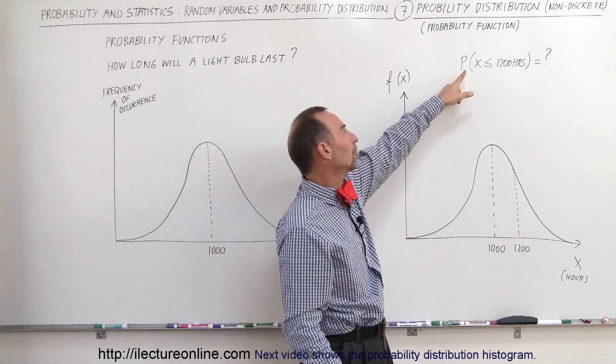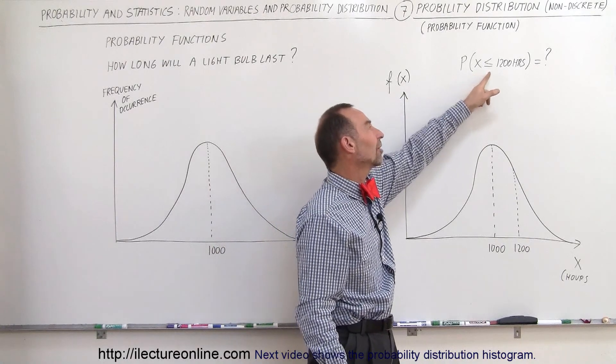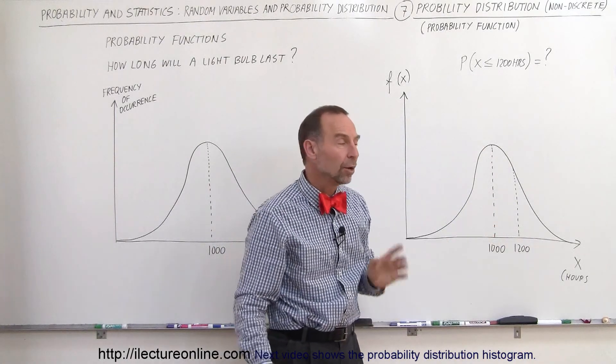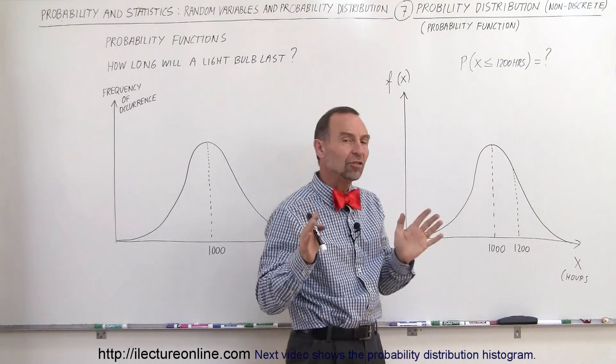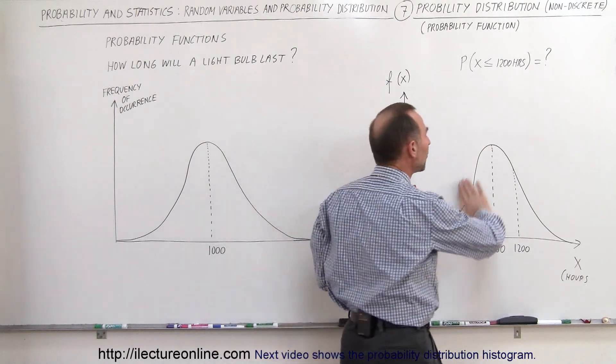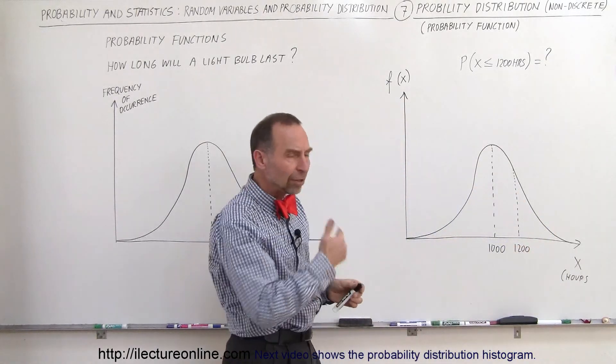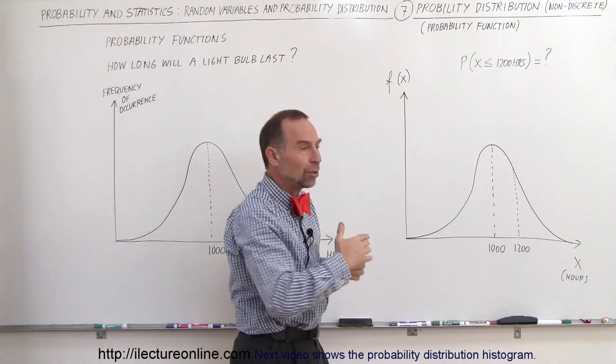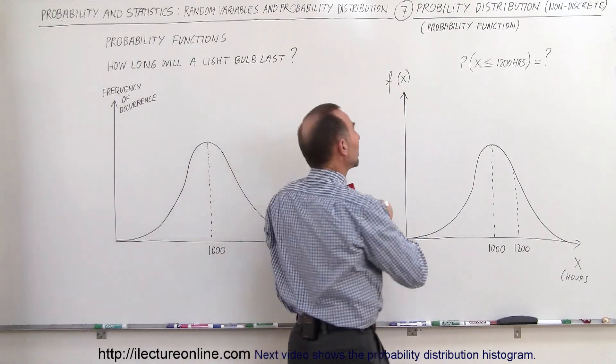And you may want to ask the question, what is the probability that x is less than or equal to 1200 hours? Well again, the definition is that the total sum of all the probabilities should add up to one, and the way to do that when it's a non-discrete or a continuous function like this, you can say that the